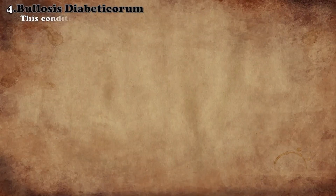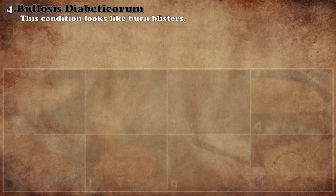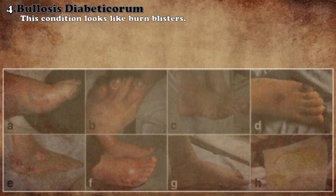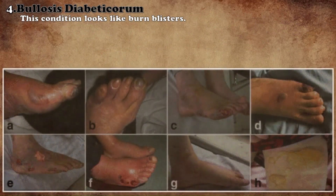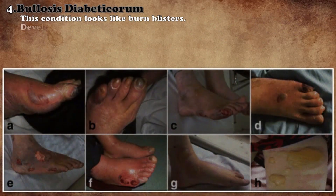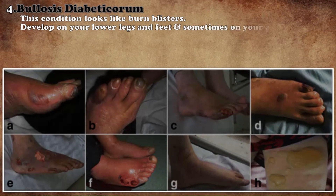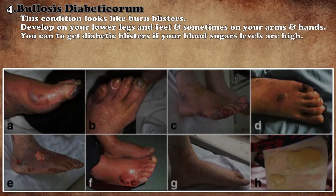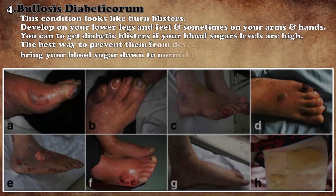Bullosis diabeticorum appears as blisters. They mostly form on the lower legs near the feet and on the top of the feet, and sometimes they also form on the arms and hands. To control this disease, it is important to keep the amount of sugar low in the body.